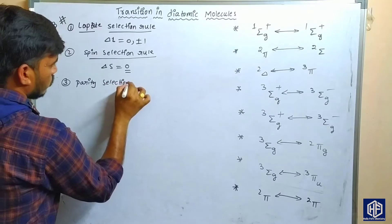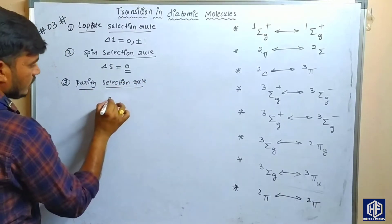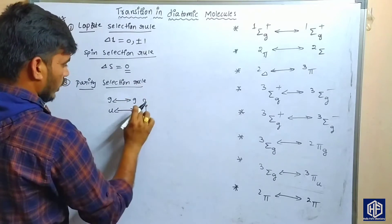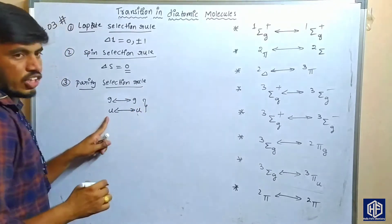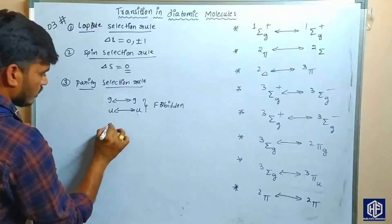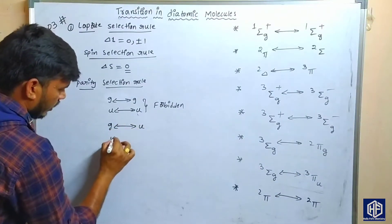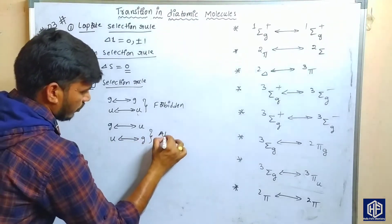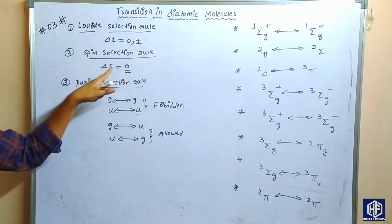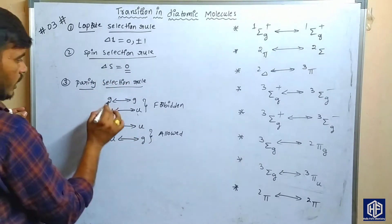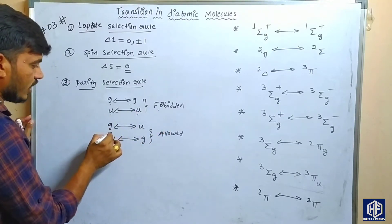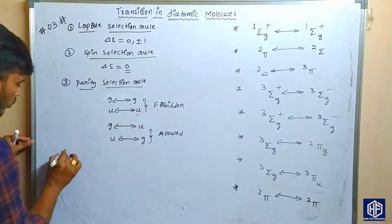The third rule is the parity selection rule. The parity selection rule means that zero-to-zero and ungerade-to-ungerade transitions are forbidden transitions. But in the case of zero-to-ungerade and ungerade-to-zero, these are allowed transitions. So zero-to-zero is a forbidden transition and ungerade-to-ungerade is also a forbidden transition, while zero-to-ungerade is allowed.